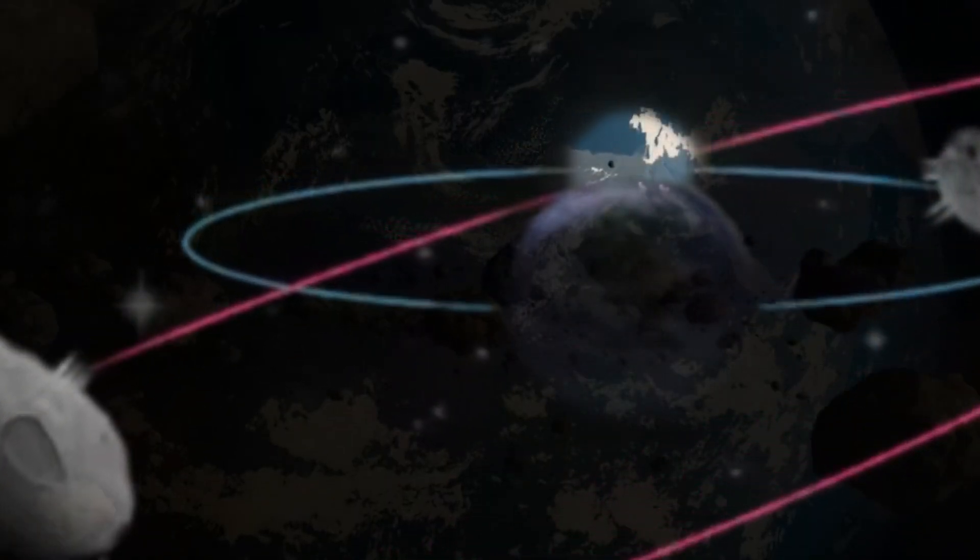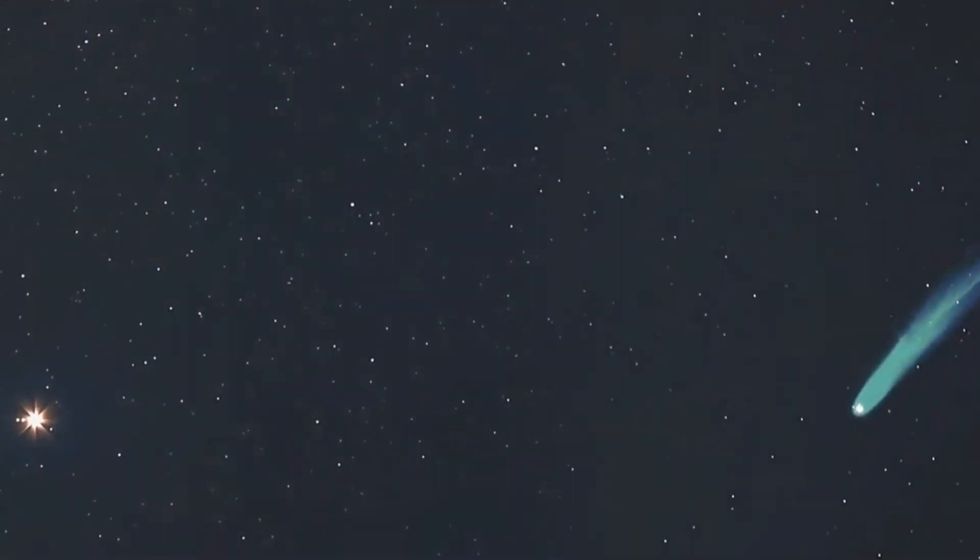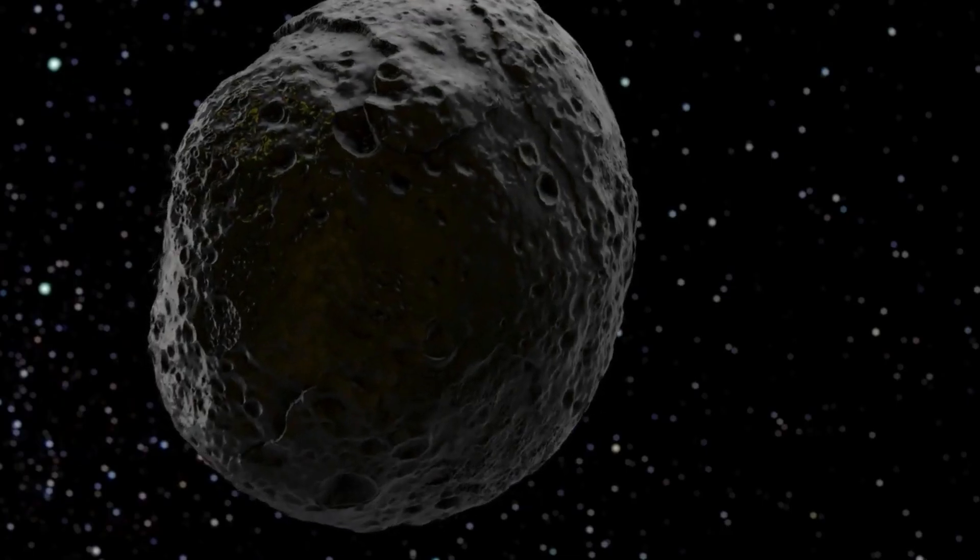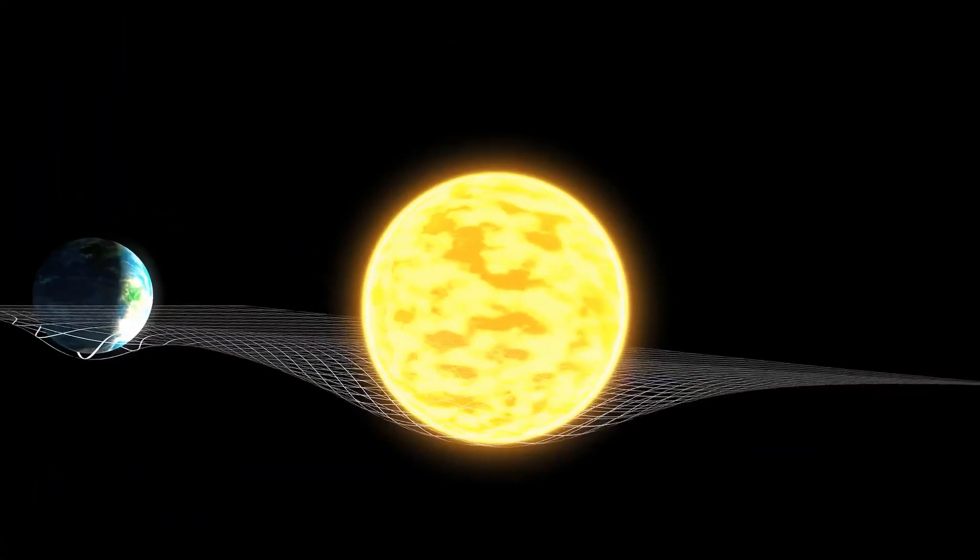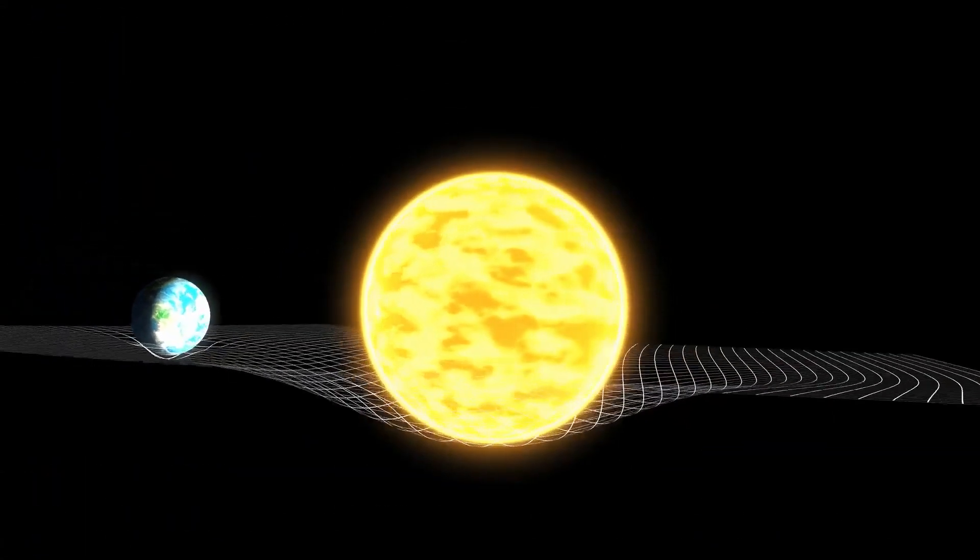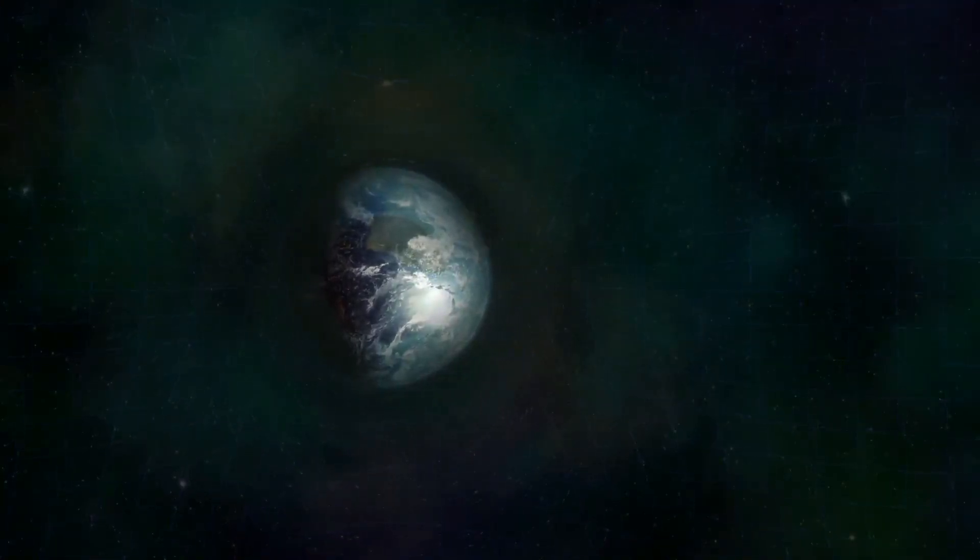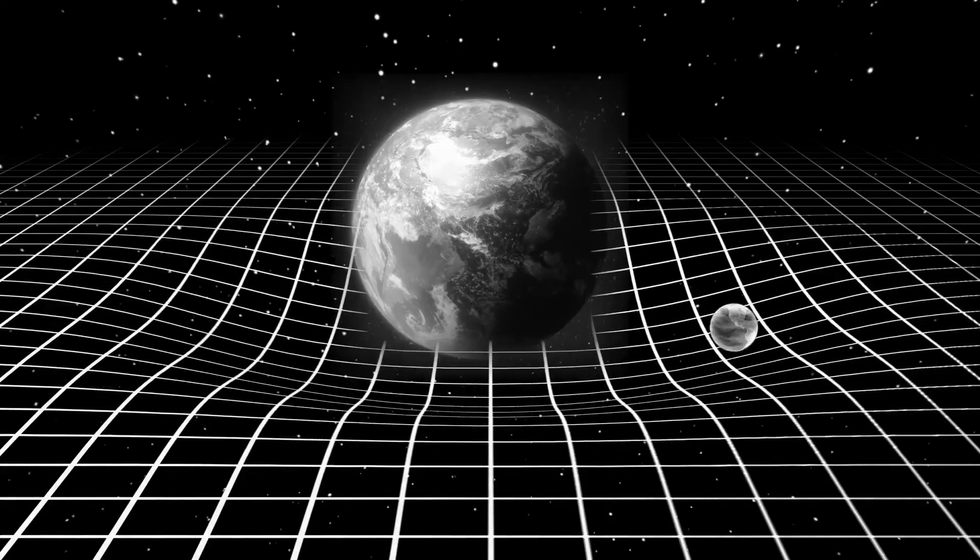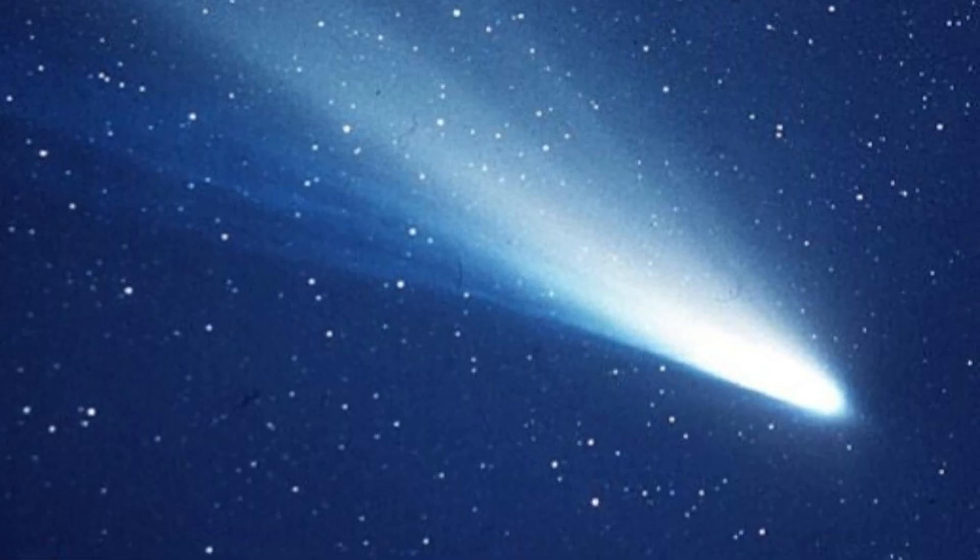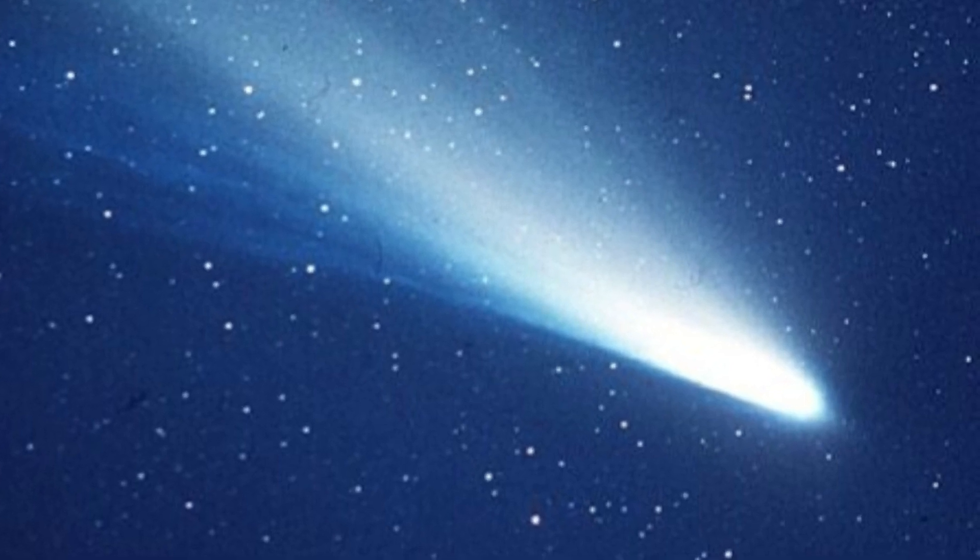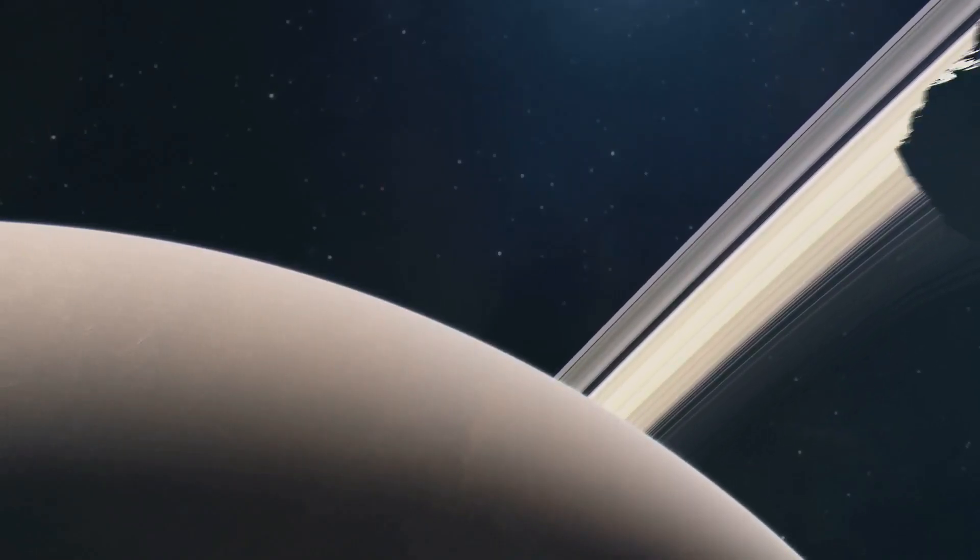But with dark comets, we don't see this tail. What gives? Scientists believe that dark comets might still be releasing gases, but in a way that's not visible with current observational methods. One possibility is that these comets release gases like water vapor or carbon monoxide, but without the surrounding dust particles that typically form a visible tail. This form of outgassing is subtle, but it still generates the non-gravitational acceleration that we observe.